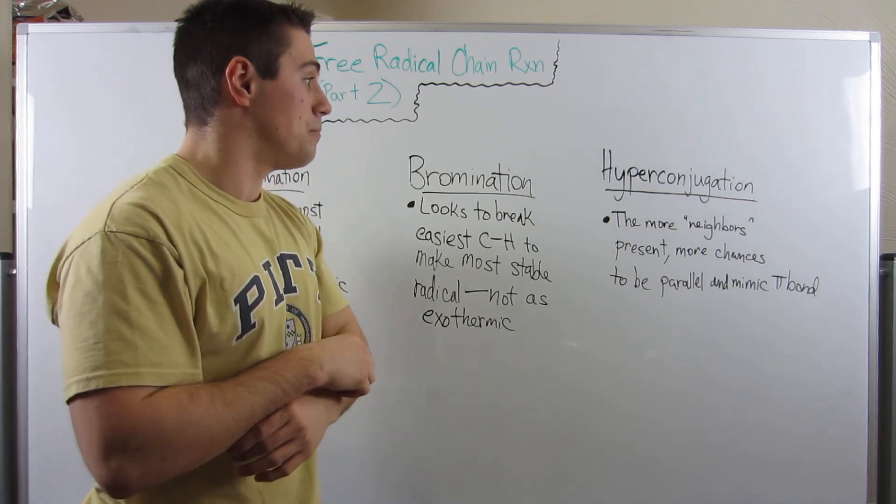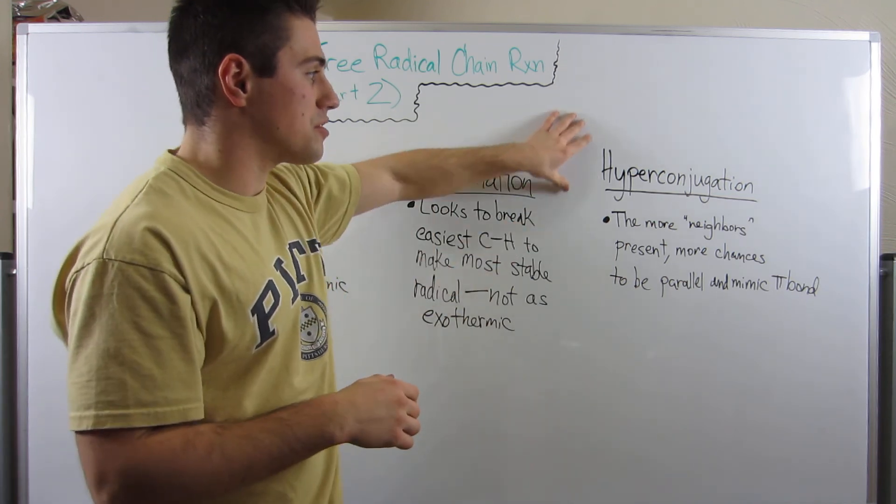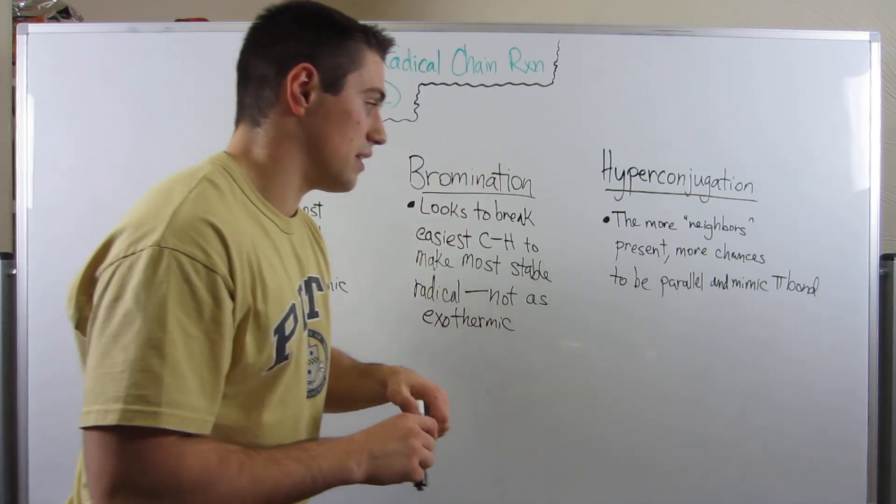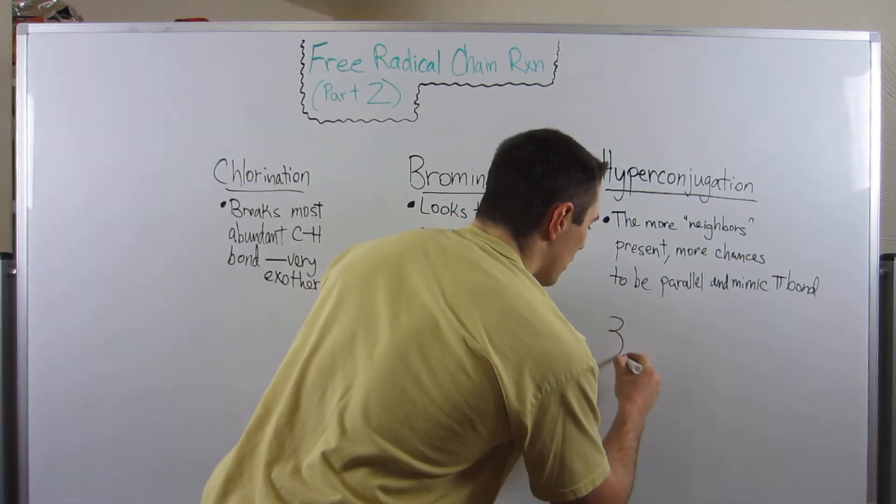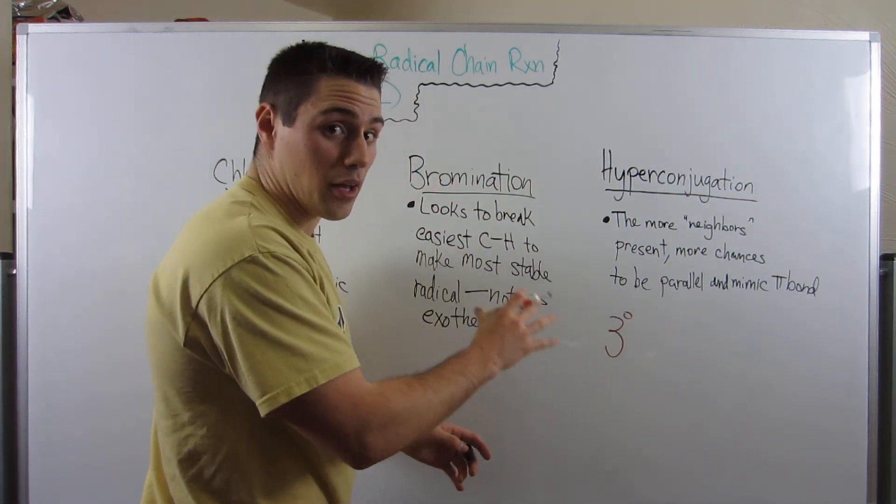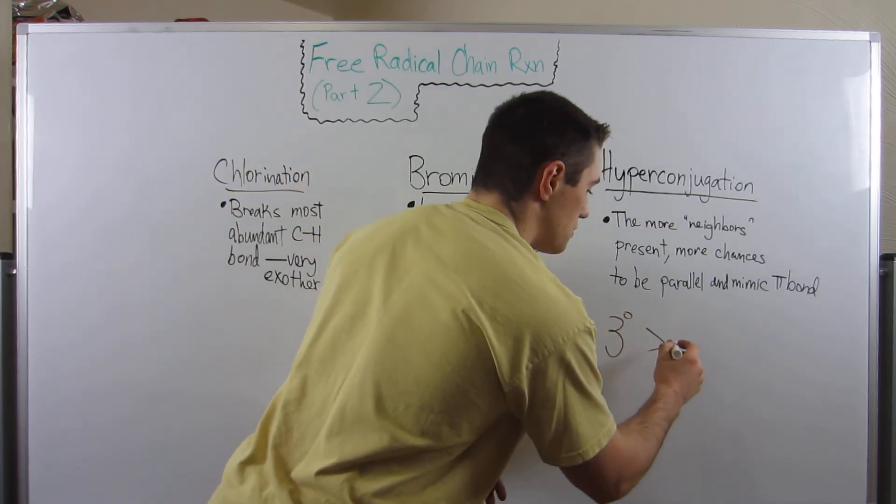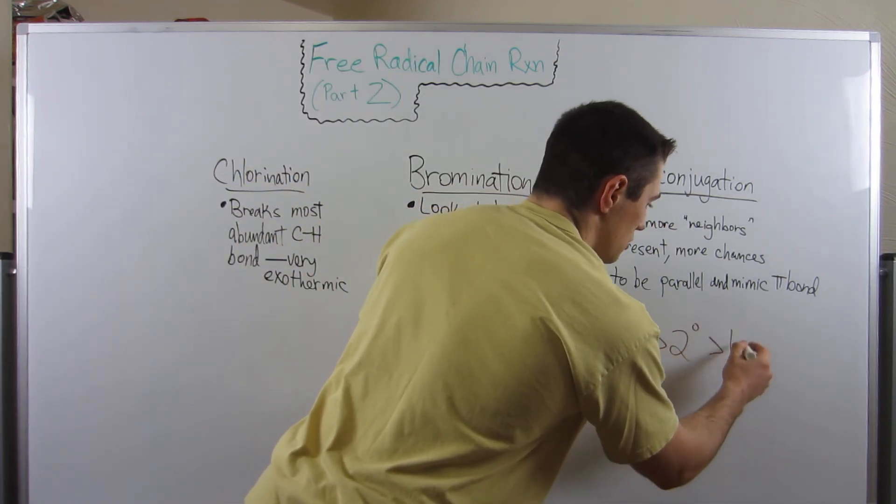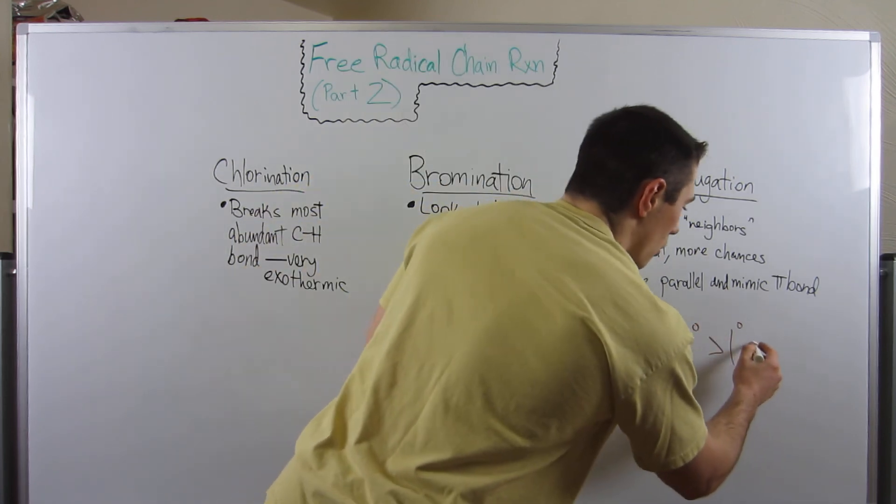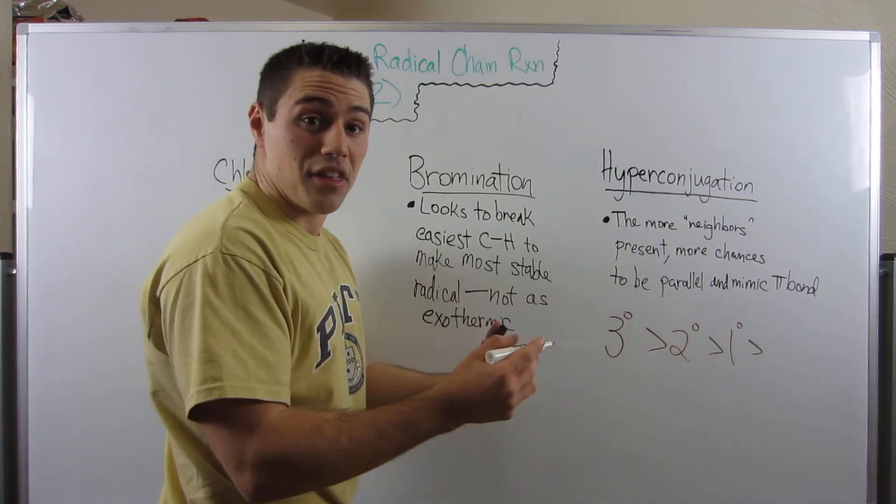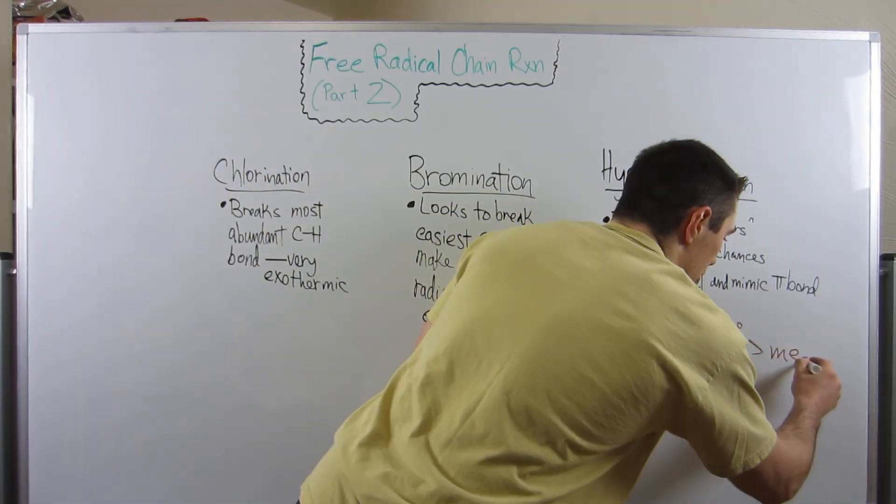If I'm going to summarize this, you can think of it like this. If you're a tertiary radical, you're the most stable radical you can be. That is more stable than a secondary radical, which is more stable than a primary radical, or if you're just methane, greater than a methyl radical.